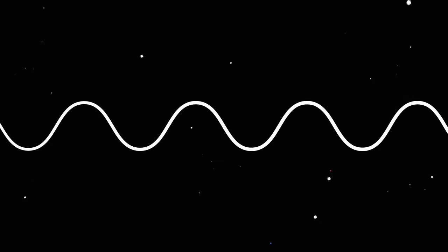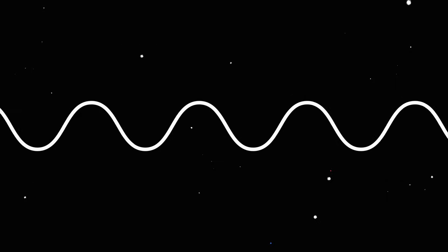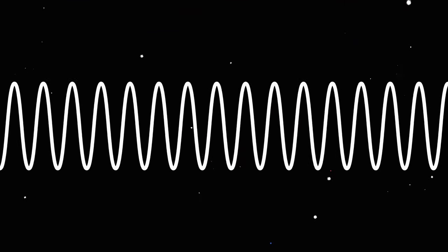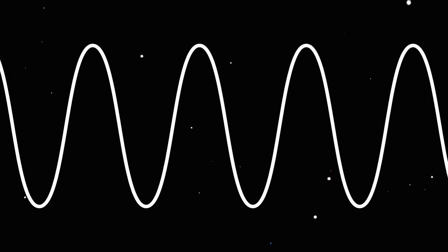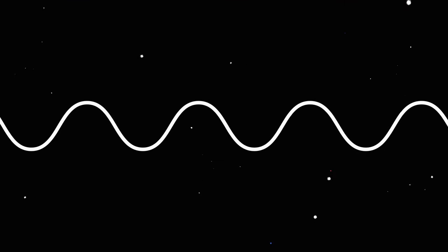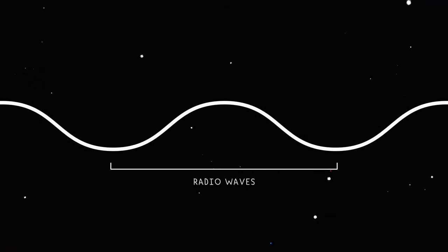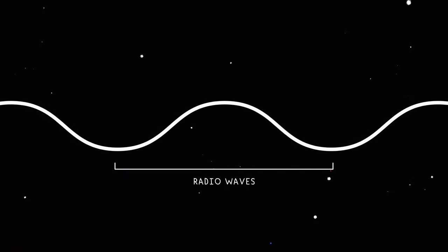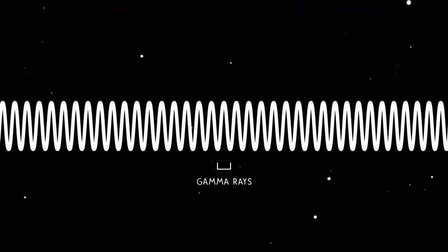Electromagnetic energy is a type of energy that can travel through space as waves that have different properties, depending on the size and spacing of the waves. These waves span a broad spectrum, from very long radio waves to very short gamma rays.